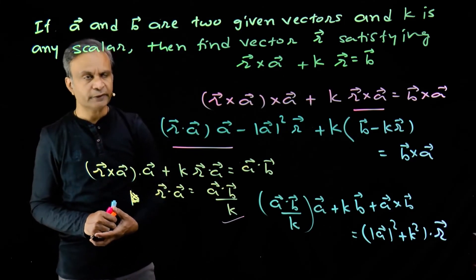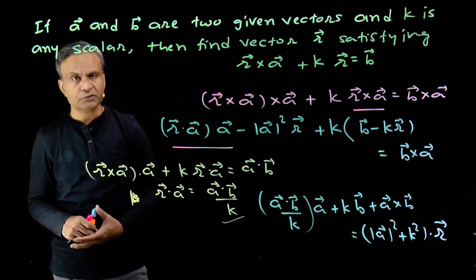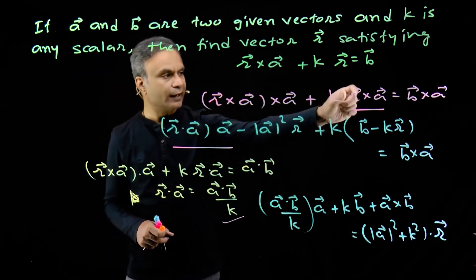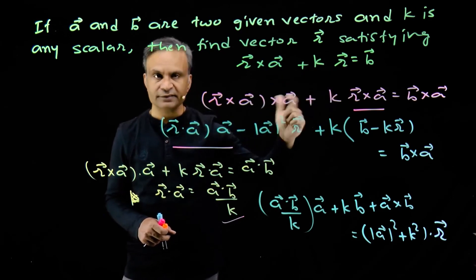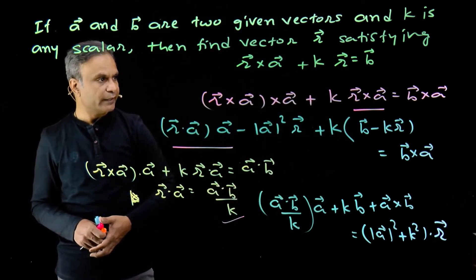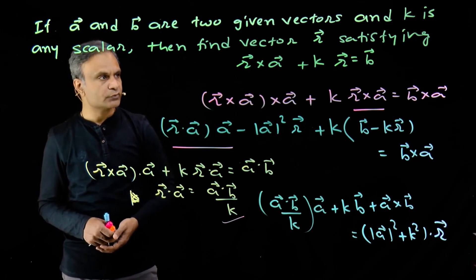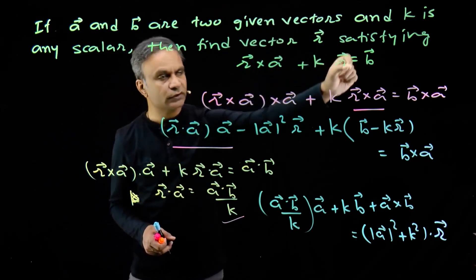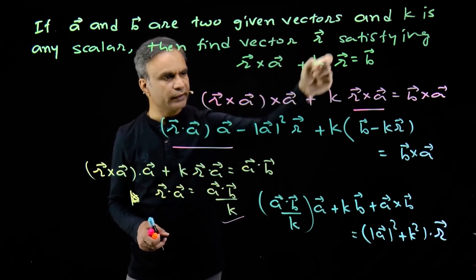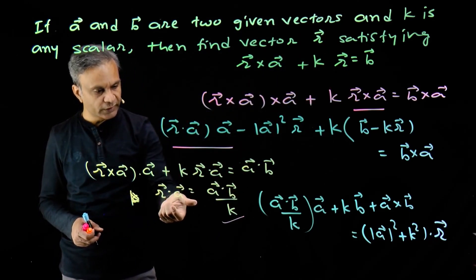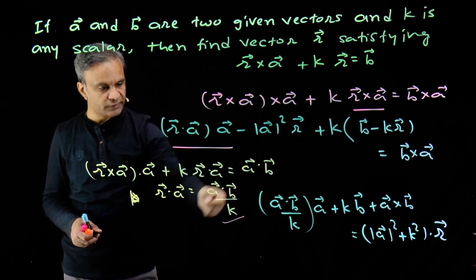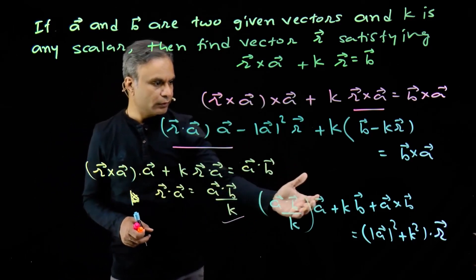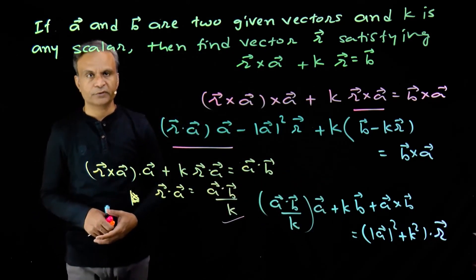To summarize what we did: we took cross product with a, because that allowed us to substitute the value of r cross a, which equals b minus k times r. This gave us a term containing r dot a, so we then took dot product with a to get the value of r dot a in terms of vectors a, b and scalar k. Putting that value back into the equation, we solved for vector r.